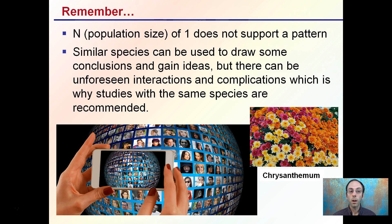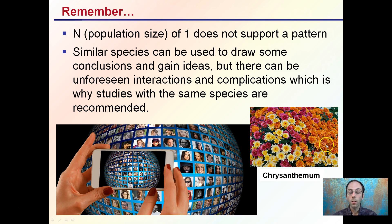Keep in mind, a population size, or n, of one doesn't support a pattern. Just because someone had success with one plant doesn't necessarily mean that's going to work for all plants. Similar species can be used to draw some conclusions and gain ideas — for cannabis, chrysanthemums are sometimes used for photoperiod development — but there can be unforeseen interactions and complications, which is why studies of the same species are recommended. These can be good for initial ideas, but when developing a theory, you want to use the actual test subjects, plants, species, or cultivar as close as possible.